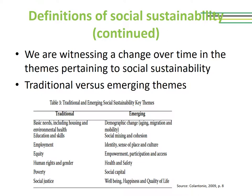On slide 13 you can see that there are two sets of values or items associated with social sustainability: the traditional ones and the emerging ones. The traditional values of social sustainability include basic needs, education, employment, and human rights, while the emerging ones focus more on social mixing and cohesion, empowerment, participation and access, social capital and well-being.